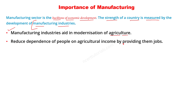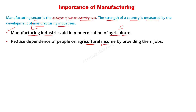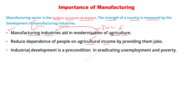Manufacturing sector agriculture पर dependence को reduce करता है by providing jobs। जैसे disguised unemployment की problem है agriculture में, लोग बाहर जाके work करना चाहते हैं - manufacturing industries में उन्हें job मिल सकती है। Industrial development is a precondition for employment opportunities - इससे unemployment यानि बेरोज़गारी खत्म होती है, और जब बेरोज़गारी खत्म होगी तो poverty भी eradicate होगी।